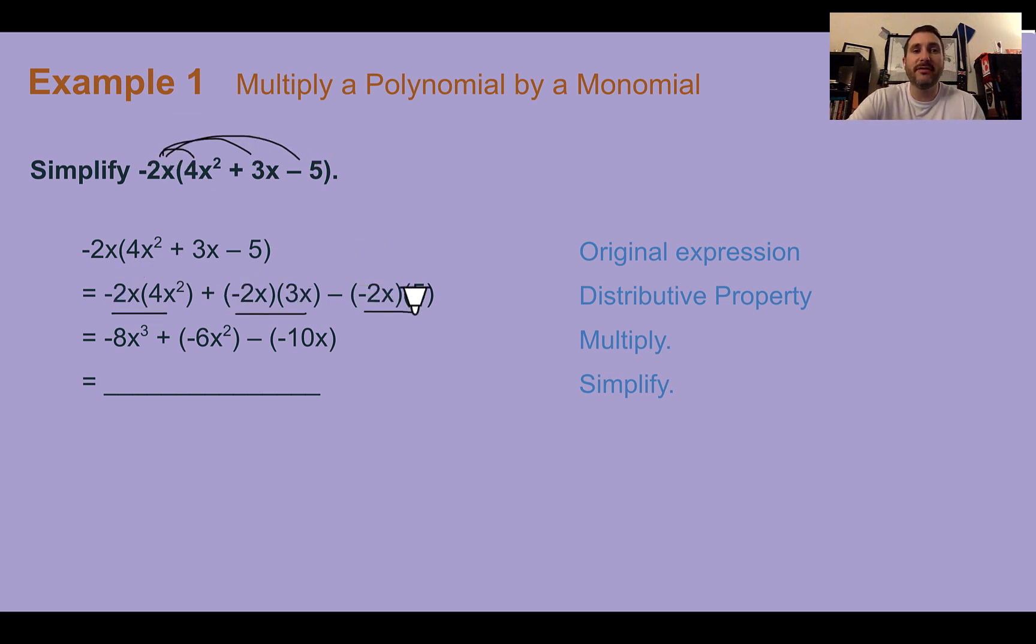When we're multiplying, this is where our product rule of exponents is going to be super necessary. We're going to multiply the coefficients, so 2 times 4 is 8, and it was negative. When we multiply x times x², this is really x¹ times x². Remember, we add the exponents. So these two together would become x³.